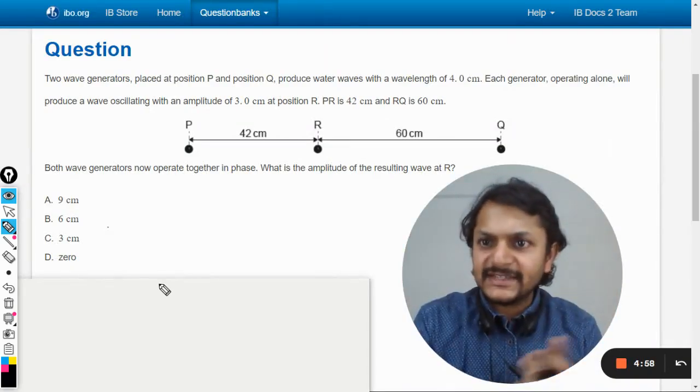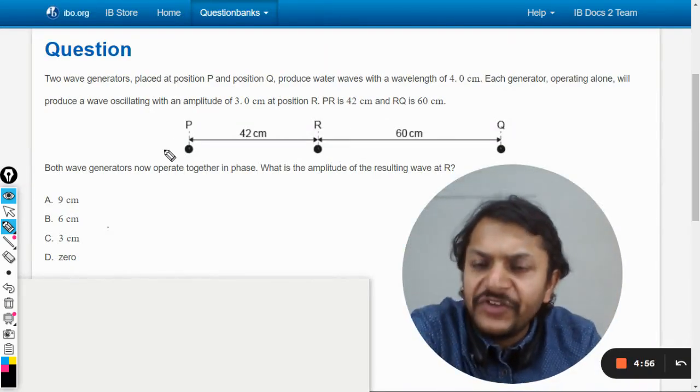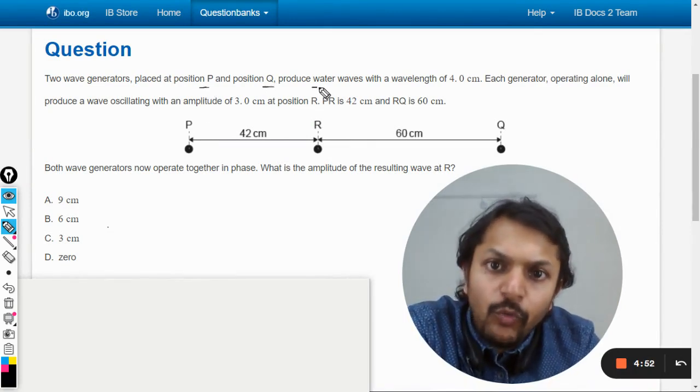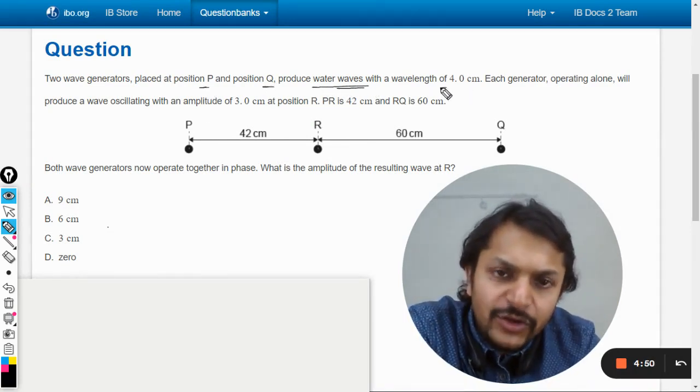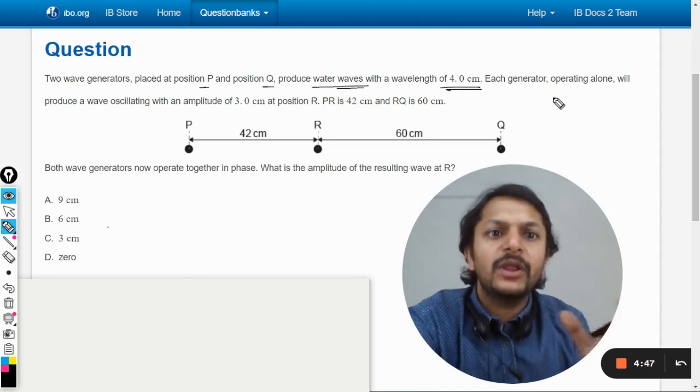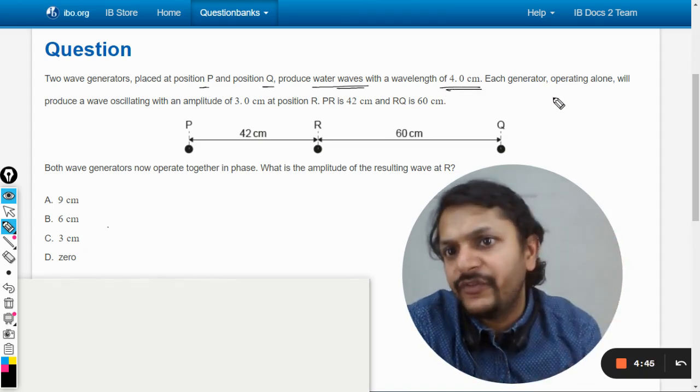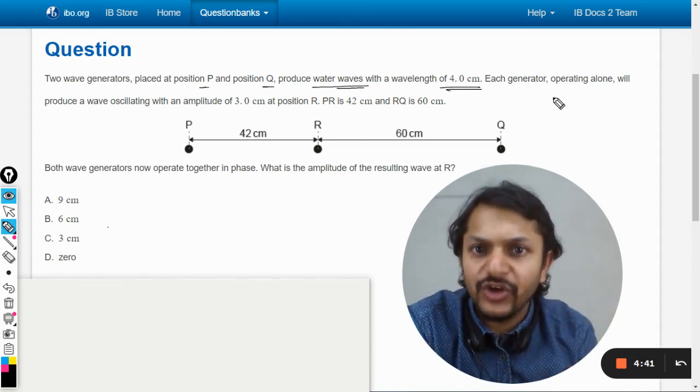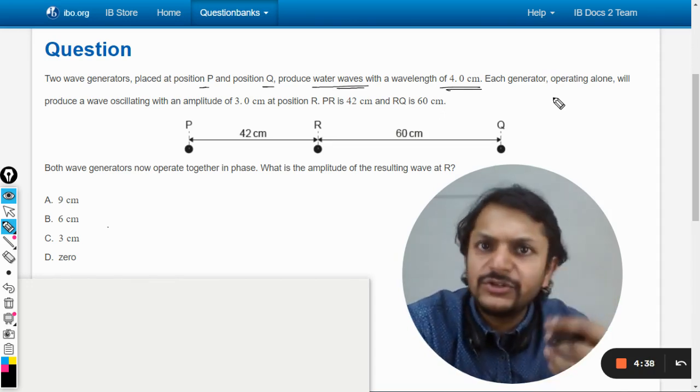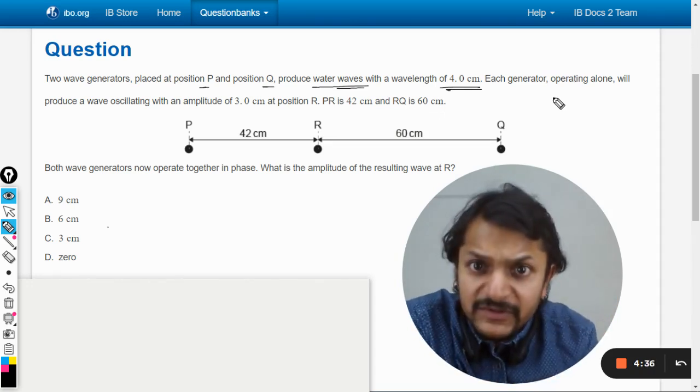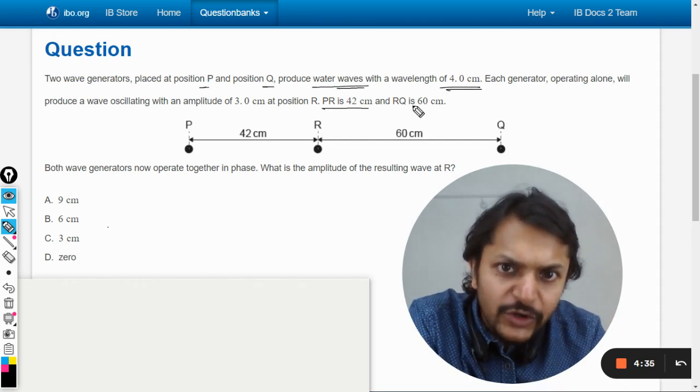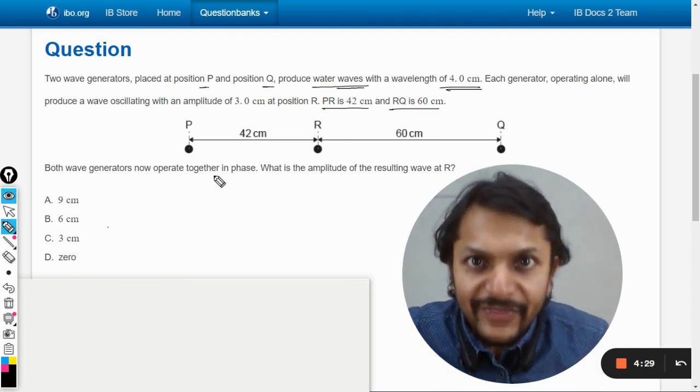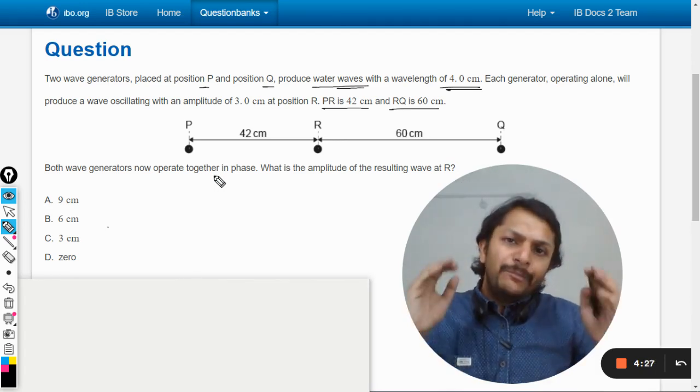All curious students, let us see what is in this question. Two wave generators placed at positions P and Q produce water waves with wavelength of 4 centimeters. Each generator operating alone will produce a wave oscillating with an amplitude of 3 at position R. PR is 42 and RQ is 60 centimeters.